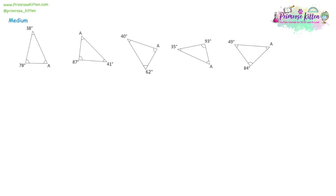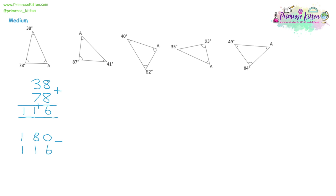Moving on to the medium questions — it's the same method, just slightly more complicated numbers. Question one: add together 38 degrees and 78 degrees using column addition. 8 plus 8, 3 plus 7 plus the one carried gives 116. Triangles add up to 180, so take away 116. We need to borrow from the 8, making it a 7. So 10 take away 6, 7 take away 1, 1 take away 1 is 0. The angle is equal to 64 degrees.